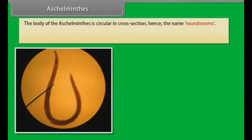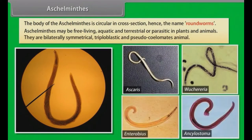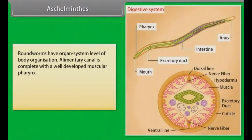Aschelminthes. The body of Aschelminthes is circular in cross-section, hence the name roundworms. Aschelminthes may be free-living, aquatic and terrestrial, or parasitic in plants and animals. Aschelminthes are bilaterally symmetrical, triploblastic and pseudocoelomate animals. Roundworms have organ system level of body organization.